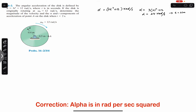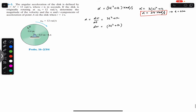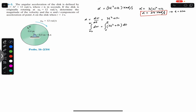Since alpha = dω/dt, we can write dω = (3t² + 12)dt. To find omega as a function of time, we integrate both sides. The left side integrates from ω₀ to ω, and the right side from 0 to t. Since at t = 0 the omega is 12 radian per second, ω₀ equals 12.